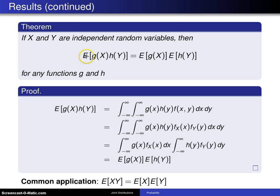This particular result is going to state that the expected value of the product of two functions of random variables is equal to the product of the expected values.